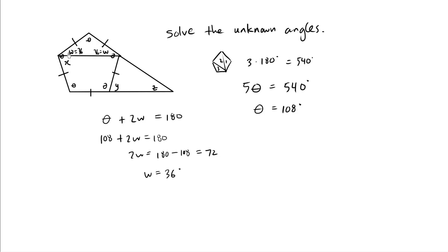Now we can solve for x because we know what the theta angle is. This whole angle theta is 108, and 108 minus 36 is your x value. So x equals theta, which is 108, minus w, which is 36. So x equals 108 minus 36, which is 72. So x is 72.